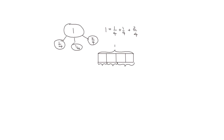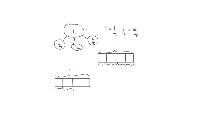We could also draw a different tape diagram, still showing the whole number 1, broken into four equal size parts — breaking it into fourths. But we could group differently. We could say 1 fourth, 1 fourth; this is 1 whole, 1 fourth, and then 3 fourths. So the number sentence would be 1 equals 1 fourth plus 3 fourths.